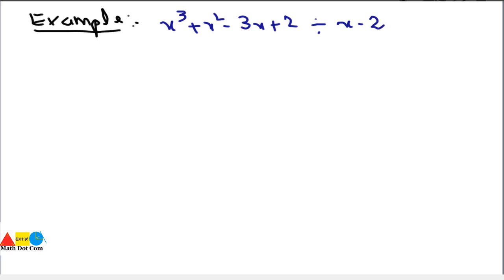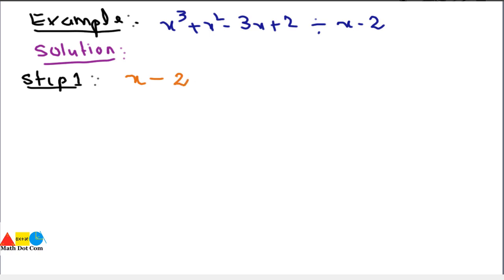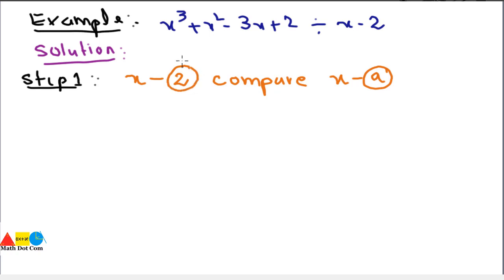We will follow a step-by-step method to find the solution using synthetic division. Step 1: take the divisor, which is x - 2, and compare it with x - a in order to compute the value of a required in synthetic division. It is clear that the value of a is 2.